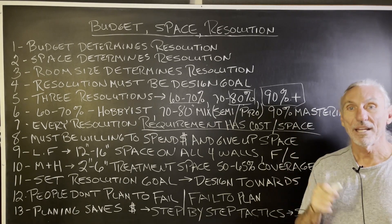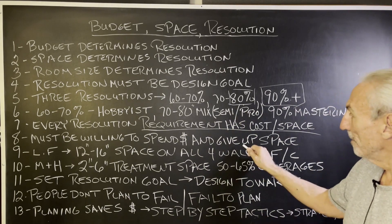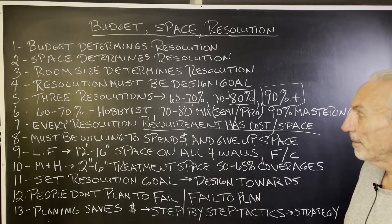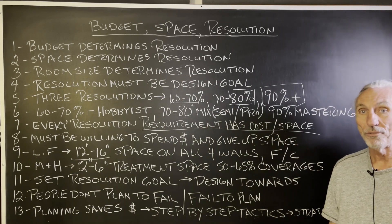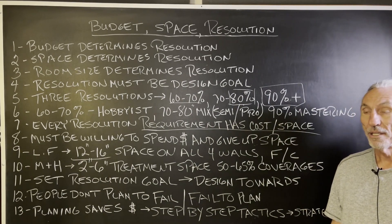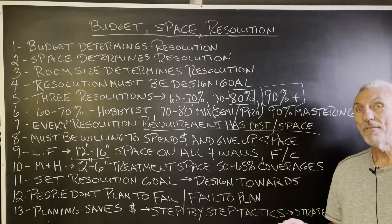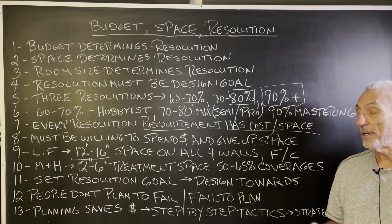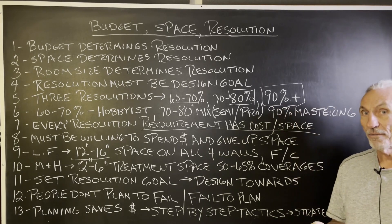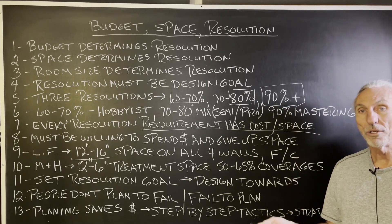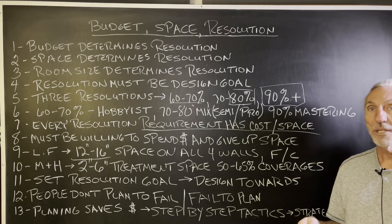Design, design, design — plan, plan, plan. That's the goal here. You must be willing to spend money and give up space. For low frequency management, that's 12 to 16 inches on all four walls and floor and ceiling. Hopefully we don't have to treat both the floor and ceiling — about 75% of the time we can get away with just treating one, but it's all dependent on your resolution goal, the size of the room, and the pressure levels you're going to work at.